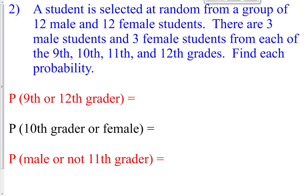Question number two: a student is selected at random from a group of 12 male and 12 female students, for a total of 24. There are three male students and three females from each of ninth, tenth, eleventh, and twelfth grade — so six students per grade, three males and three females, making 24 students total. Find each probability.